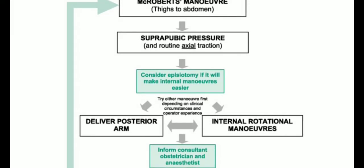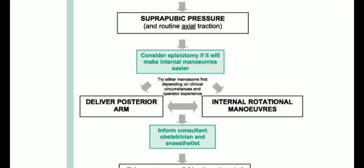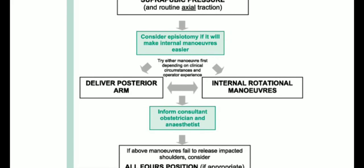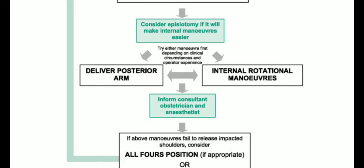After suprapubic pressure, consider episiotomy if it will make internal maneuvers easier. If the baby is not delivered, proceed to internal maneuvers. You can try either delivery of the posterior arm or internal rotation maneuvers first — it is not a hard and fast rule. The choice depends on clinical circumstances and operator experience. More detail is available in my other video on the shoulder dystocia OSCE station.